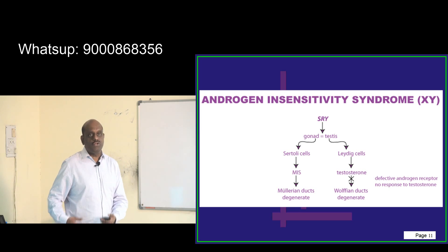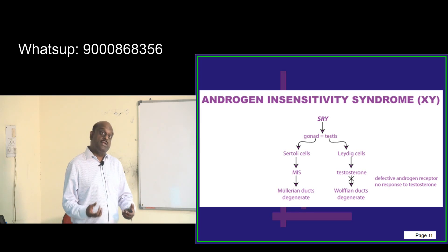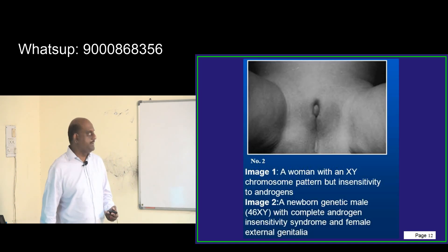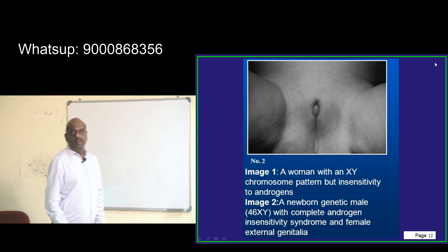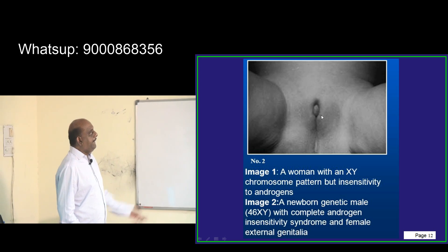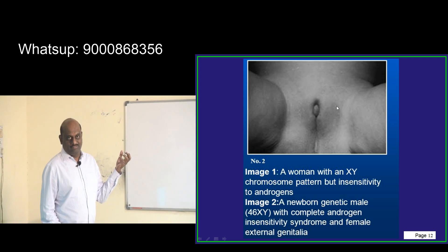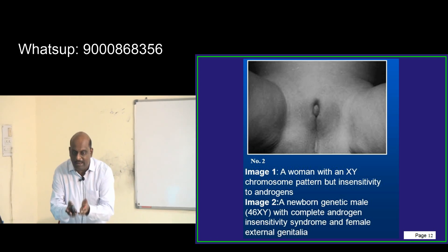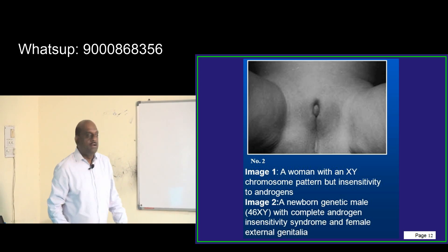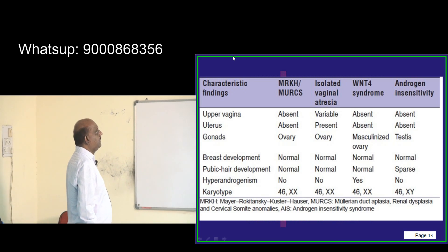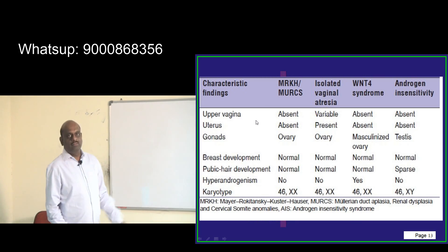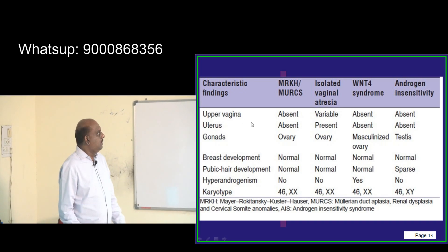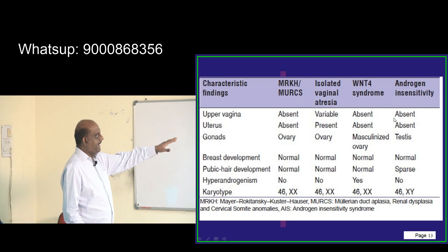Gynecomastia in liver cirrhosis occurs because estrogen metabolism doesn't occur in a cirrhotic liver, causing estrogen to remain elevated and breasts to develop. In androgen insensitivity syndrome, a blind-ending pouch-like vagina is present, but the uterus doesn't form. The upper vagina is absent in androgen insensitivity syndrome because it shares Müllerian origin with the uterus.